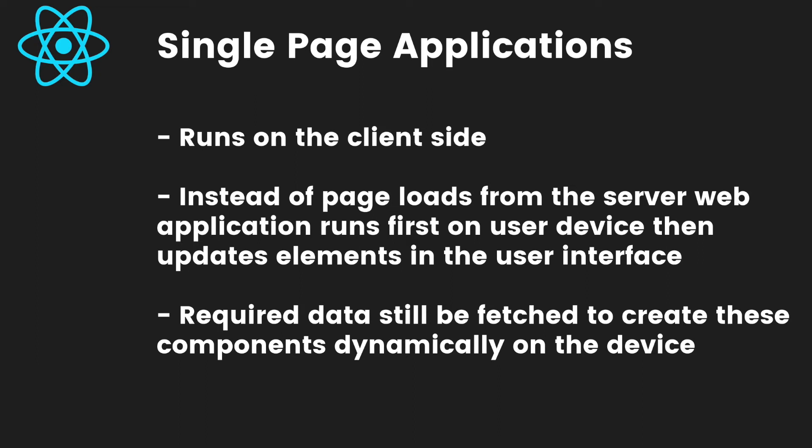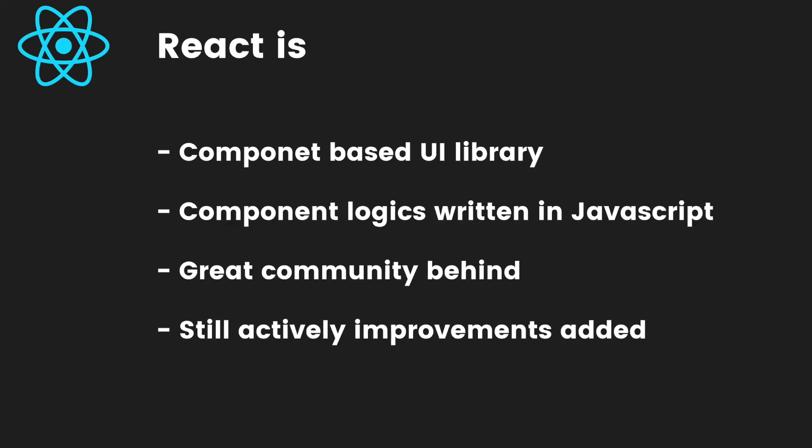The application runs on the user's device first and elements are updated afterwards if required. If you need to fetch some data from another source or from your backend server, that data can still be fetched and shown in your application — the rendering will happen afterwards. Dynamic applications can still live inside React, and you can integrate it with any API you want.